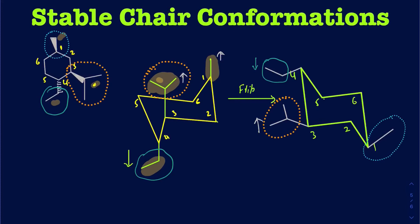At the fourth position, your axial is going to be pointed up, but that particular axial is going to have only a hydrogen, and you don't really show the hydrogens. That's the reason you don't want to make it too crowded by drawing all of those in there.